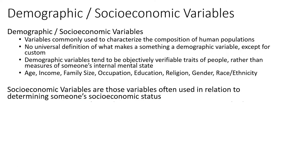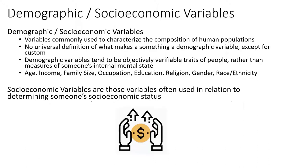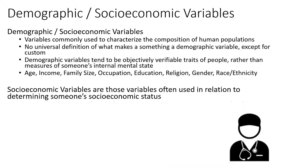A subset of demographic variables are socioeconomic variables — those often used to determine someone's particular socioeconomic status. In terms of actually measuring socioeconomic status, there are three key ingredients that usually appear in some combination. First, someone's educational attainment. Next, income is a common measure, though it's been recommended by academics to use wealth as a better indicator of someone's position in the socioeconomic system. Lastly, and not always present, is someone's occupation.